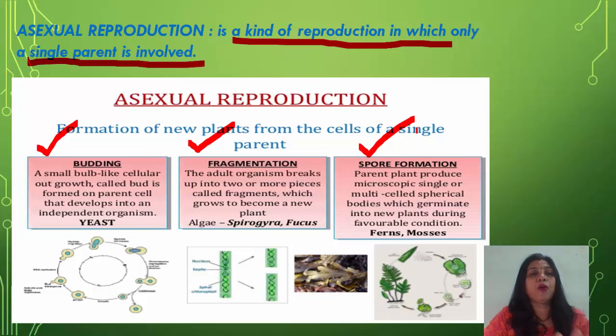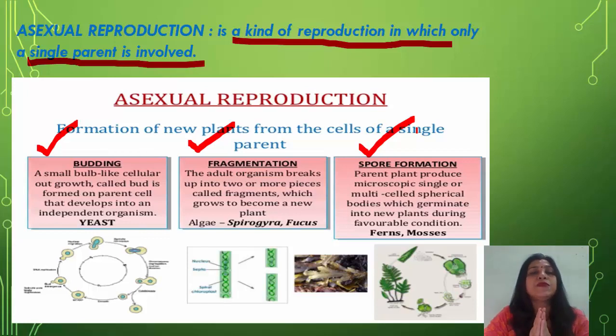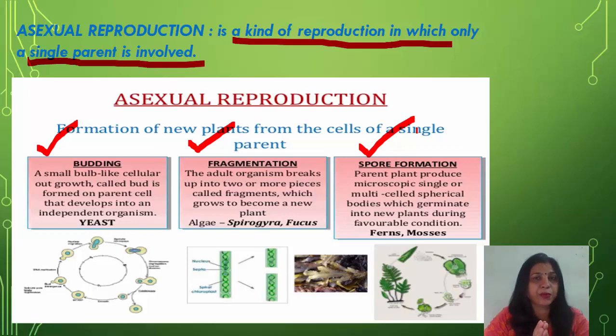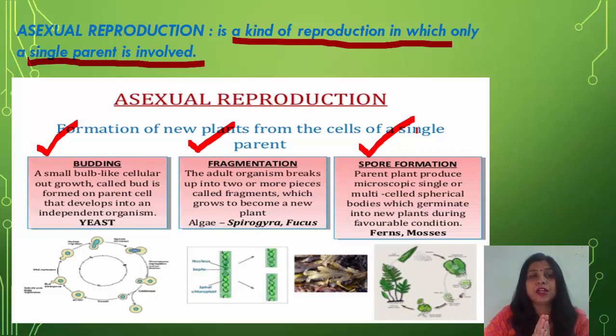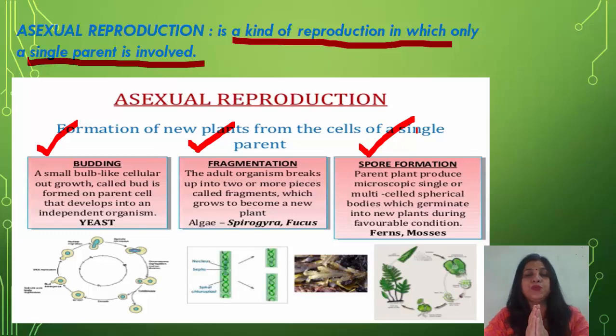The formation of new plants from the cells of a single parent is known as asexual reproduction, and its three types are budding, fragmentation, and spore formation.